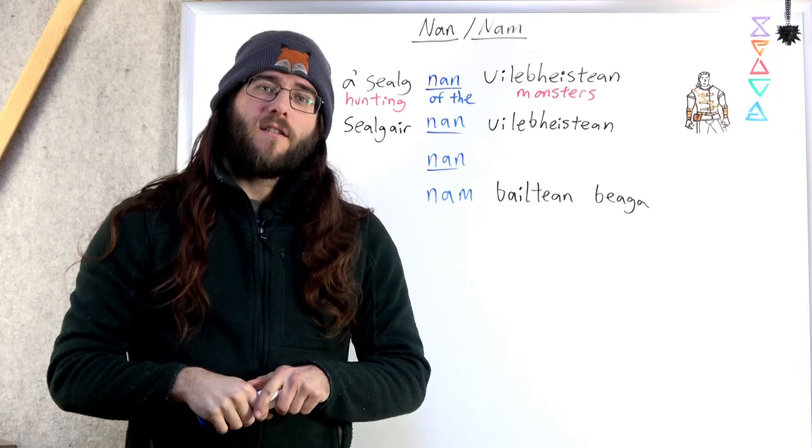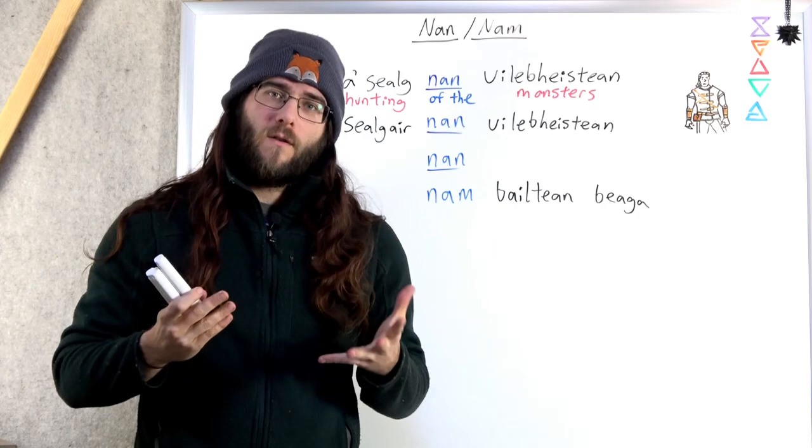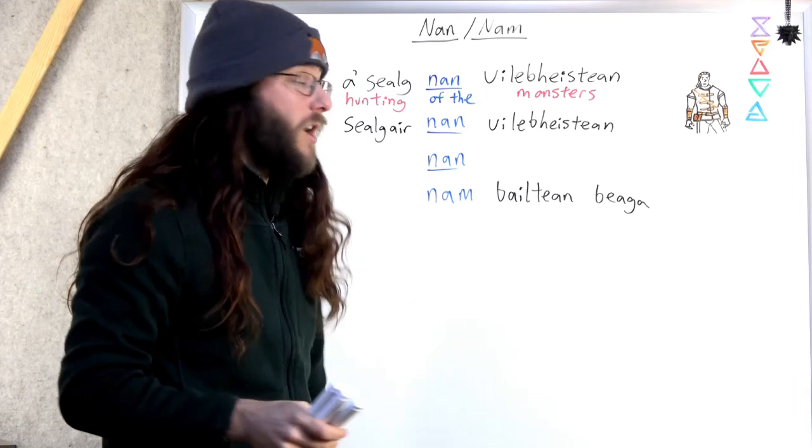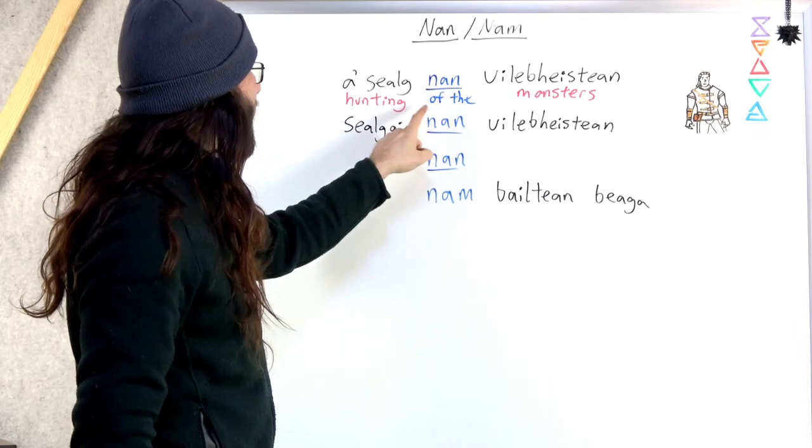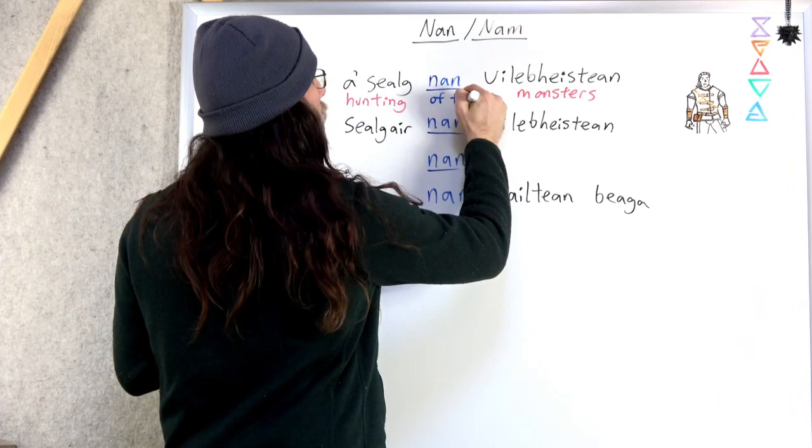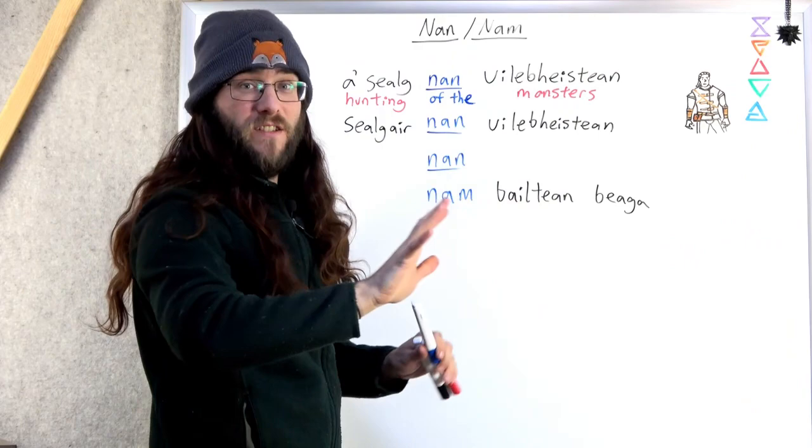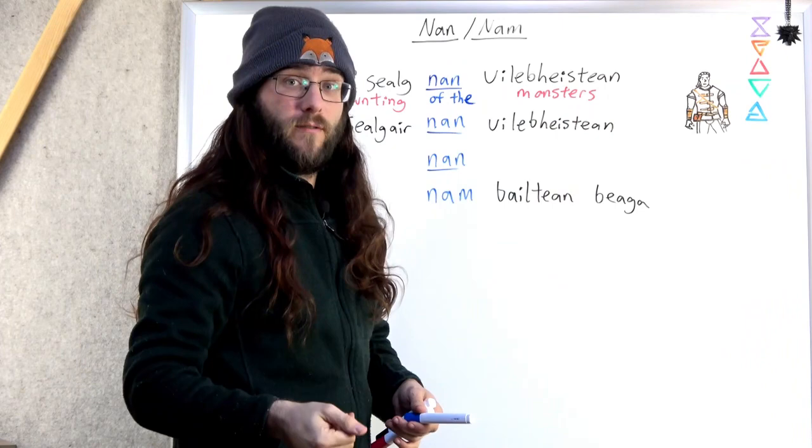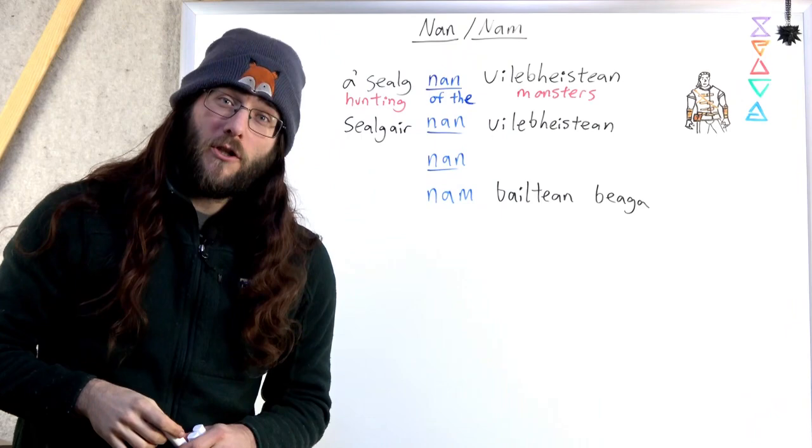Gaelic often likes to put the onto things, like the breakfast, the monsters, the dogs, where in English we might not put the on. So hunting the monsters. We want to say hunting the monsters. If we're just saying hunting monsters, we don't need nan. A shalak uleviščin. But if we're talking about hunting the monsters in general, or perhaps in a certain area, a shalak nan uleviščin.